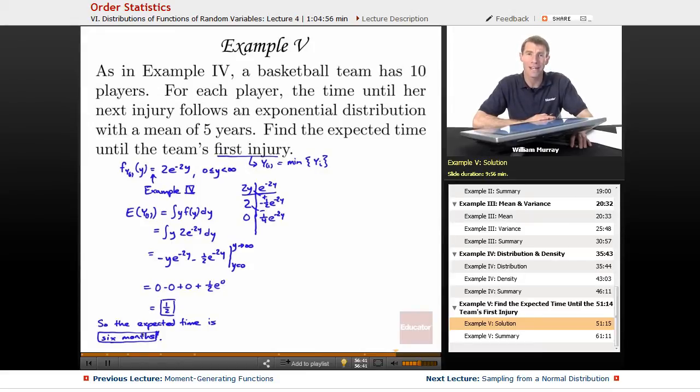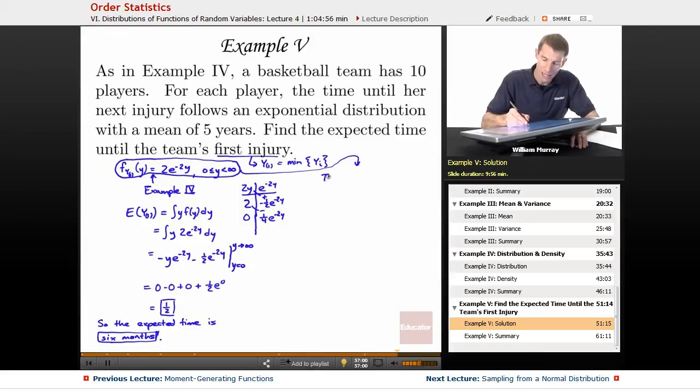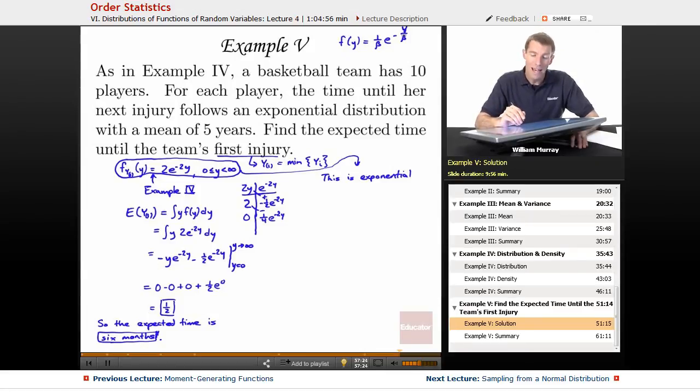I mentioned that there was actually a quick way to figure this out, and let me show you now how we could have saved a lot of work here, which is to look back at that distribution that we had there and notice that this is another exponential distribution. This is exponential. Let me remind you of the form of an exponential distribution. It has density function f of y equals 1 over beta e to the negative y over beta.